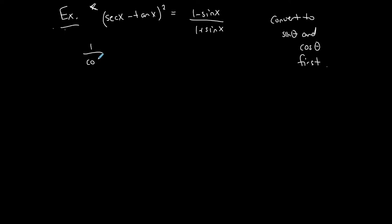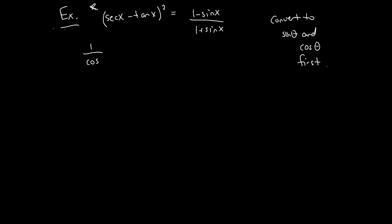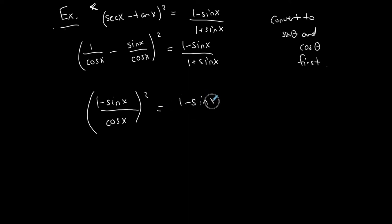I'll change secant x to 1 over cosine x and tangent x to sine x over cosine x, squaring the whole thing. My goal is a single fraction, and I already have a common denominator, so I bring the numerators together: (1 minus sine x) over cosine x, all squared, equals (1 minus sine x) over (1 plus sine x). I'm thinking ahead — it's getting closer to what I want. I'll square the numerator and denominator separately.